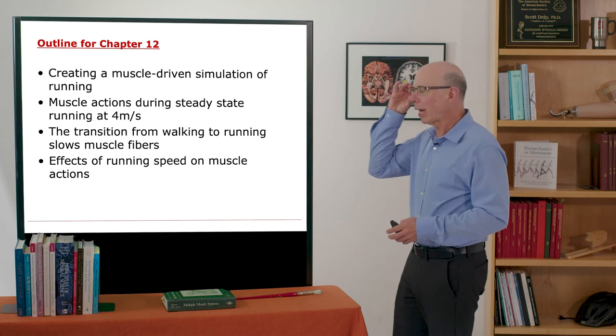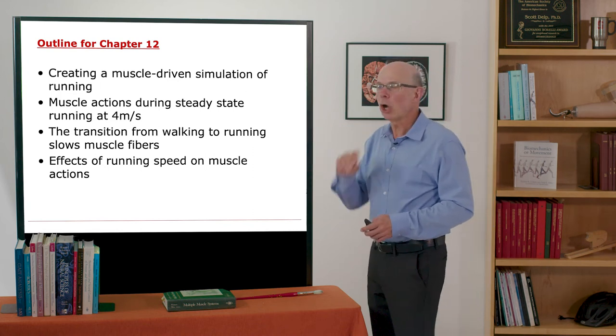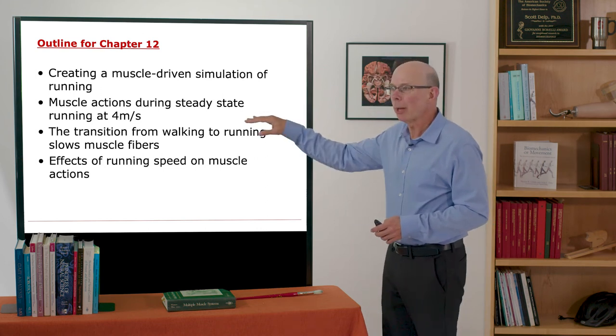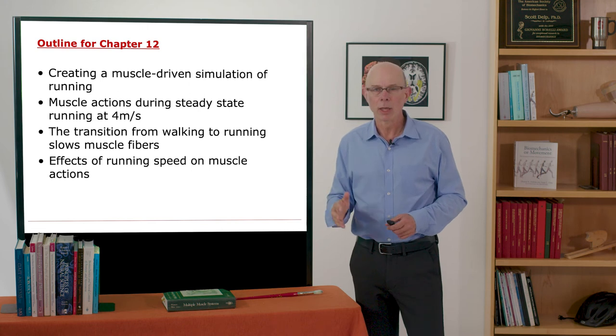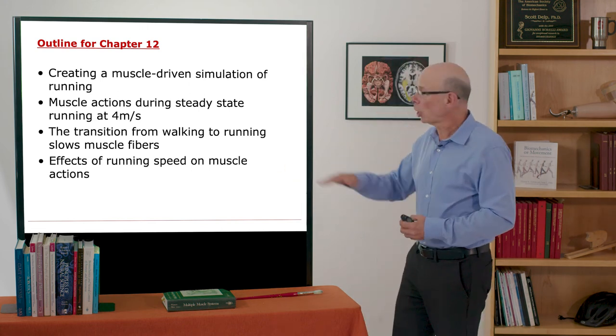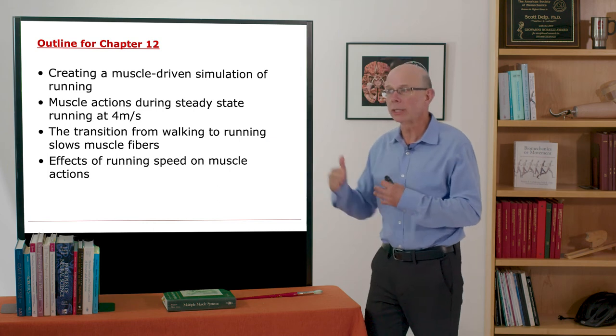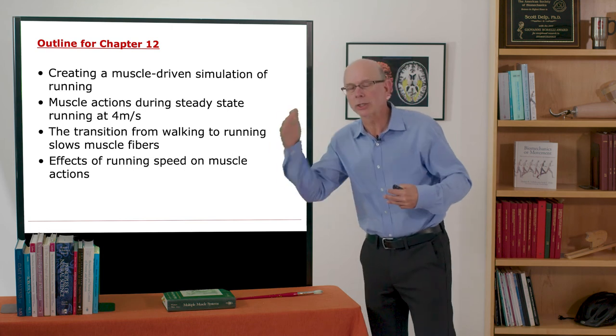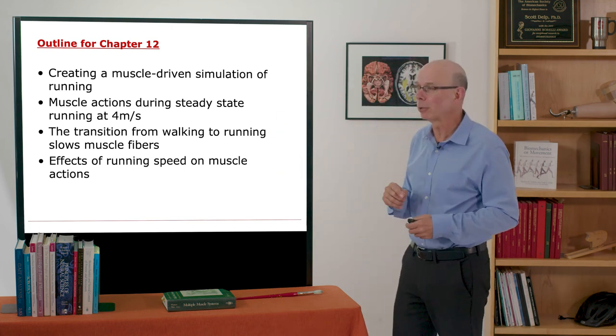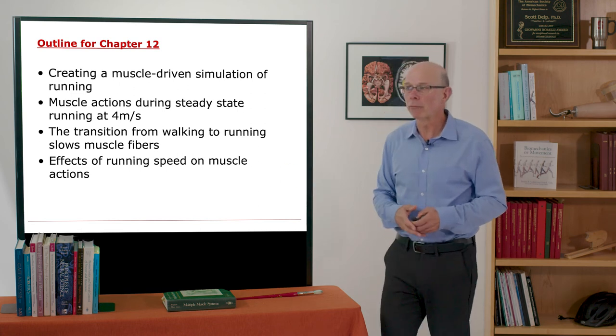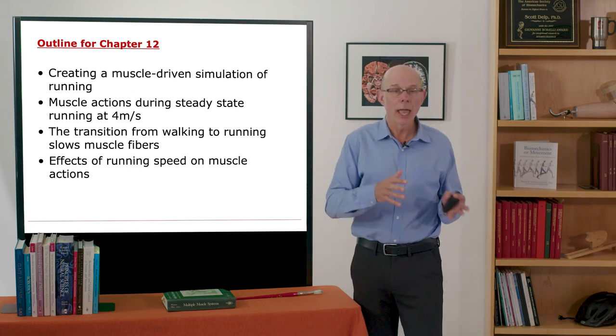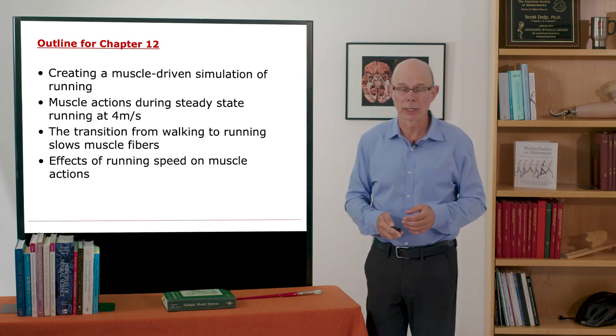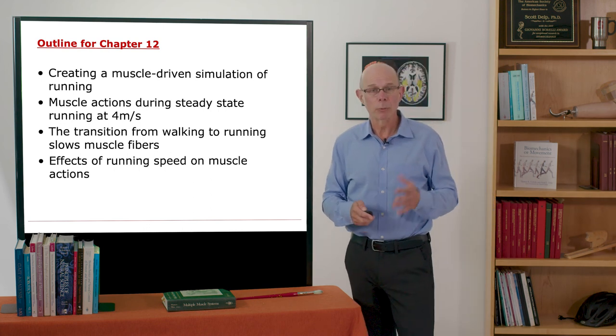So our plan for chapter 12 in muscle-driven running is to first talk very briefly about creating a muscle-driven simulation of running. Then we'll talk about muscle actions during a steady state run at about four meters per second. We'll talk about the transition from walking to running and see the surprising result that as we walk faster and then transition to a run, it actually slows our muscle fibers. We'll look at the effects of running speed on muscle actions and we'll also look at the transition from running to very high speed running or sprinting. So that's the plan as we move forward.